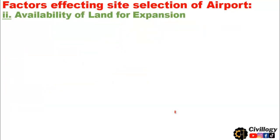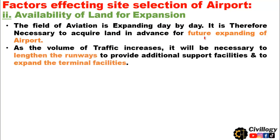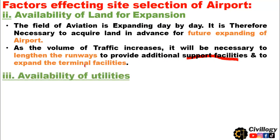The second point which affects the site selection of an airport is availability of land for expansion. The field of aviation is expanding day by day. Therefore, it is necessary to acquire land in advance for future expansion of the airport. As the volume of traffic increases, it will be necessary to lengthen the runways, provide additional support facilities, and expand the terminal facilities.